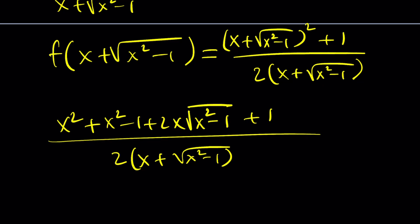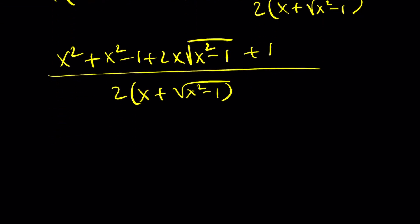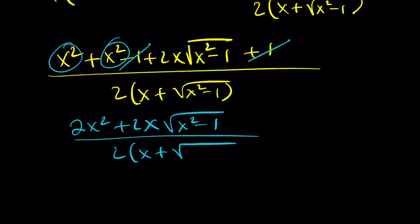Let's not distribute because we may be able to factor the numerator. Our negative 1 and positive 1 cancels out. We get x squared plus x squared, which is 2x squared. And then I can kind of write this as 2x squared plus 2x times the square root of x squared minus 1 all over 2 times x plus square root of x squared minus 1.